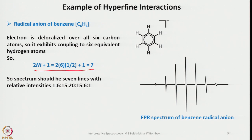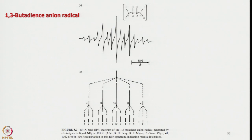Going back to the benzene radical anion: as mentioned, 6 equivalent hydrogen atoms interact with the lone unpaired electron, giving 7 lines (a septet). This is a beautiful EPR spectrum, and it can also be represented in a stick diagram form.